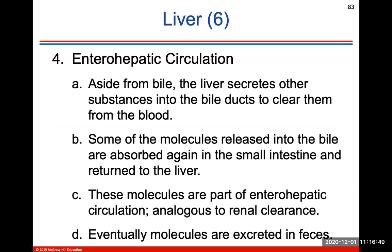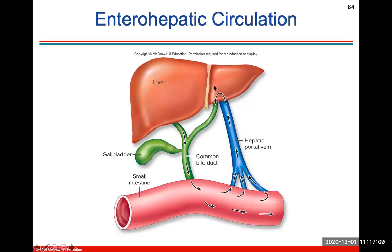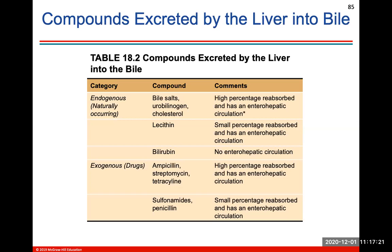In enterohepatic circulation, aside from bile, the liver secretes other substances into the bile ducts to clear them from the blood. Some of the molecules released into the bile are absorbed again in the small intestine and returned to the liver — these are part of enterohepatic circulation. Eventually, molecules will be excreted in the feces. Compounds excreted by the liver into the bile include bile salts and bilirubin. The bile salts are the big one, because bile salts help to digest fats.